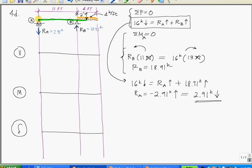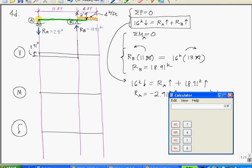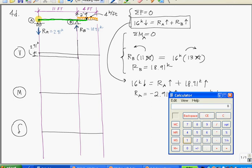Alright, let's continue with the shear diagram. We basically just look at all of the forces and reactions acting on the beam from left to right. So starting at point A, we have R A going down 2.91 kips. Between A and B, there is no load, there are no reactions, so I'm going to come straight across. At point B, I have an upward force, R sub B equals 18.91.